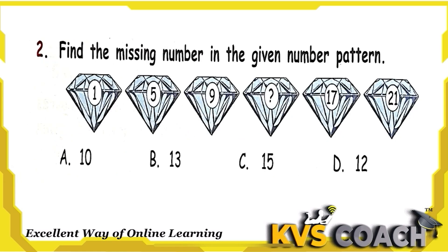The next question is: find the missing number in the given number pattern. The series is 1, 5, 9, __, 17, 21. What is the difference between them? The difference is 4. 1 plus 4 is 5; 5 plus 4 is 9; 9 plus 4 is 13; 13 plus 4 is 17; 17 plus 4 is 21. So the missing number is 13. Option B, 13, is the right answer.